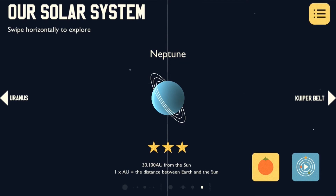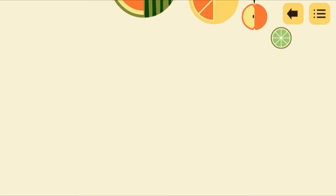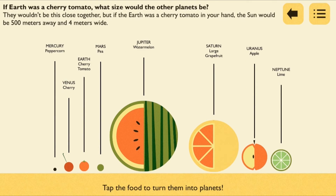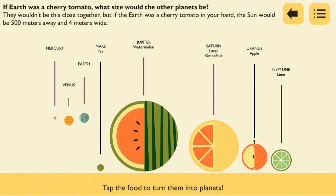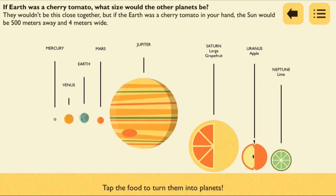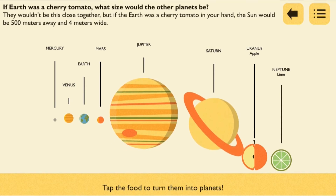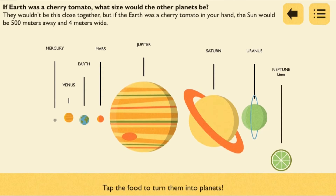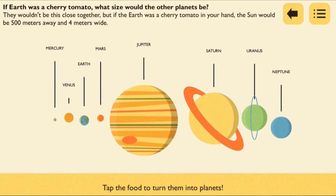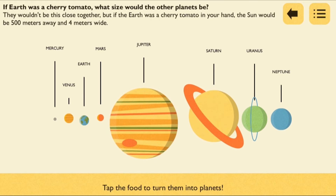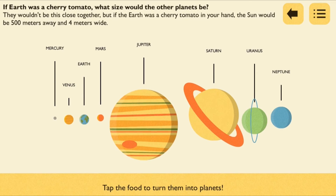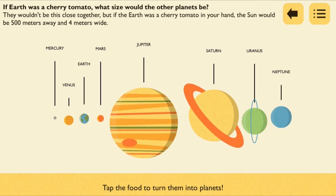But there are more than just facts to be discovered. If you tap down in the bottom right hand corner, you can bring up your very own experiment and learn more about the size of the planets in relation to each other. By comparing the planets to common fruit, you can get a much better idea about the size of them and the difference between them. For example, Jupiter is as large as a watermelon, Saturn a large grapefruit, whereas Uranus would be an apple and Neptune a lime, and Mercury would be a tiny peppercorn.